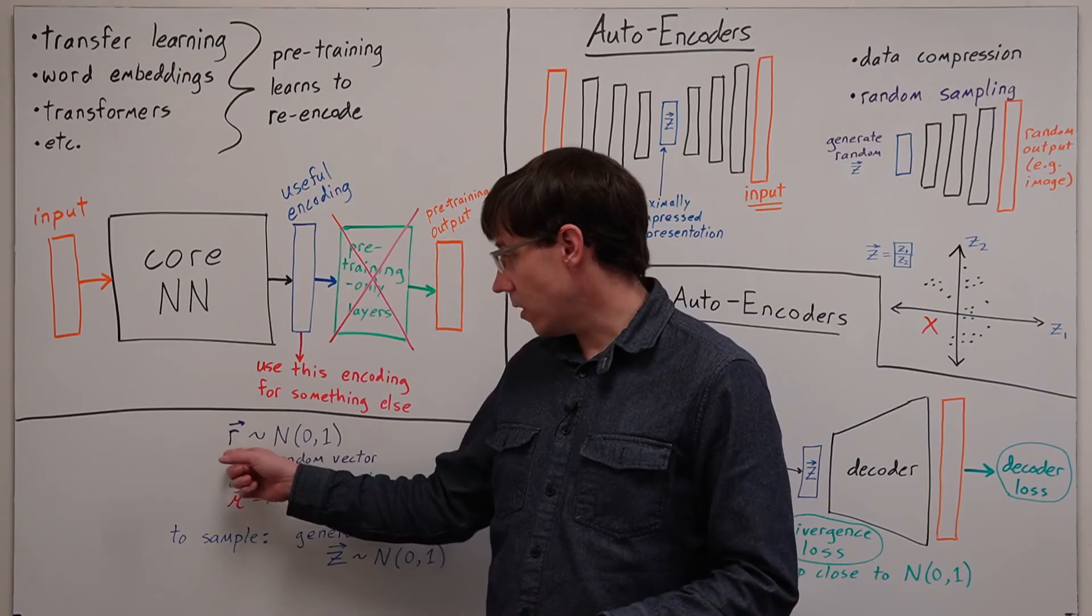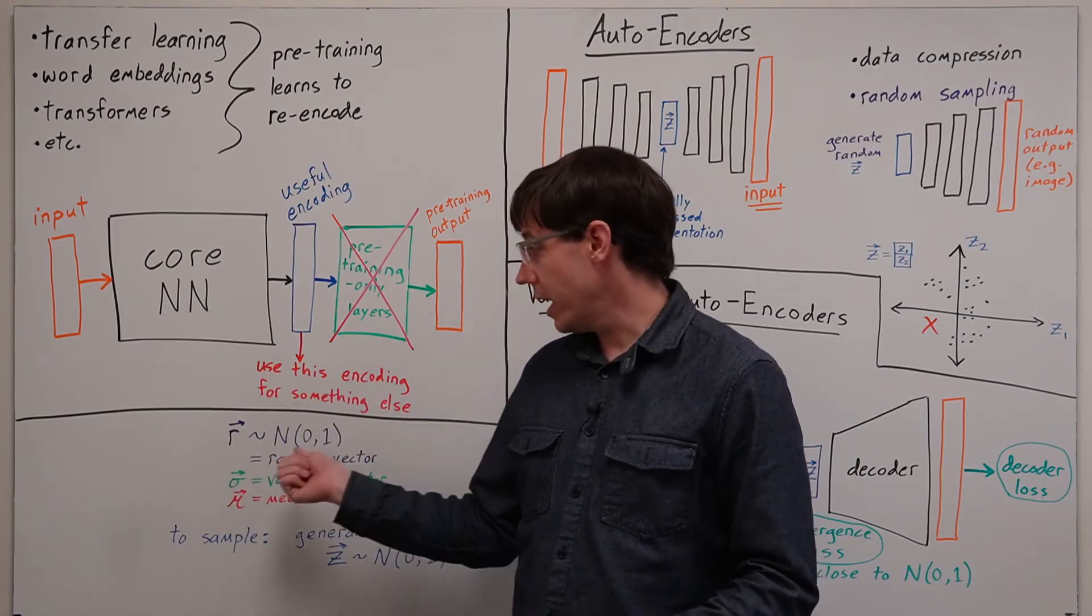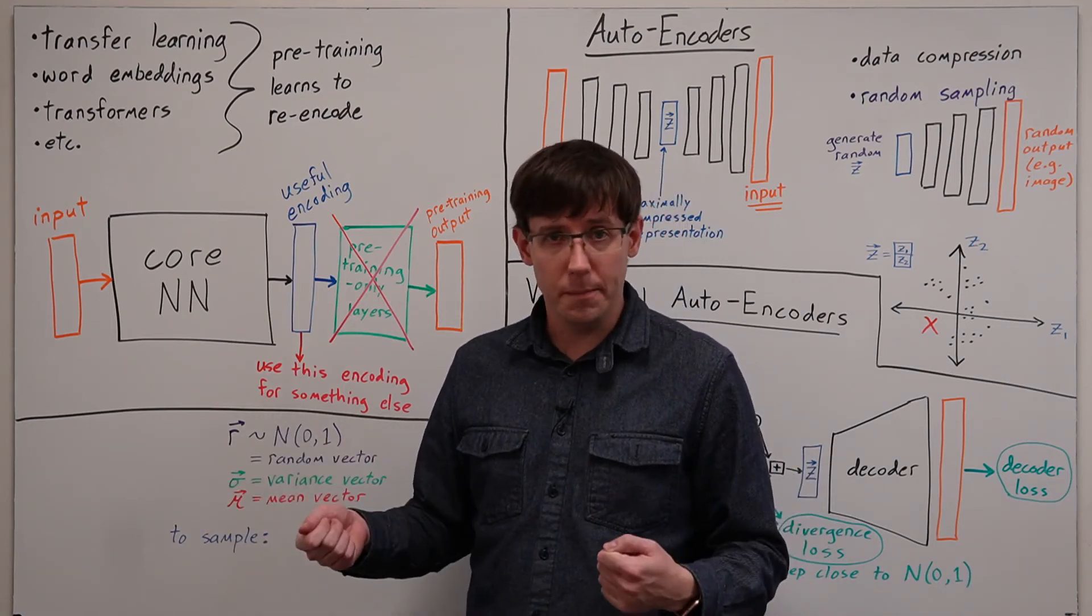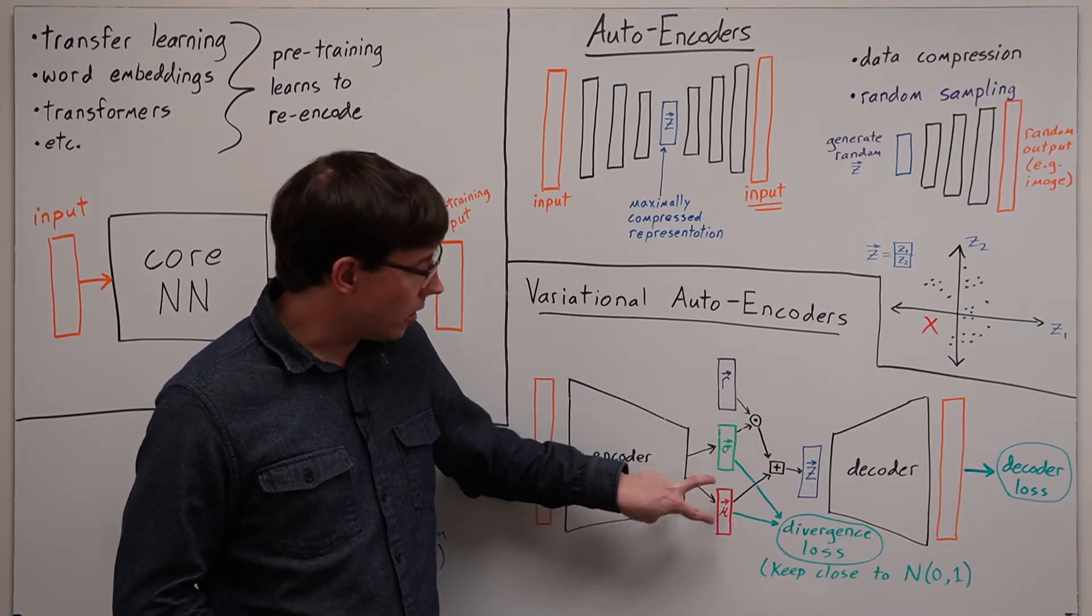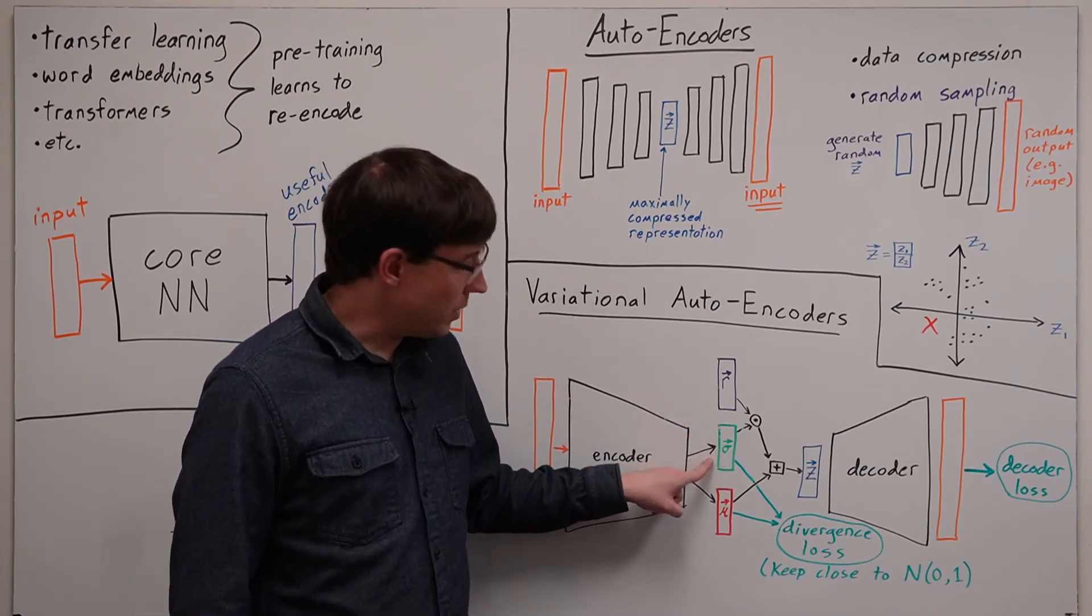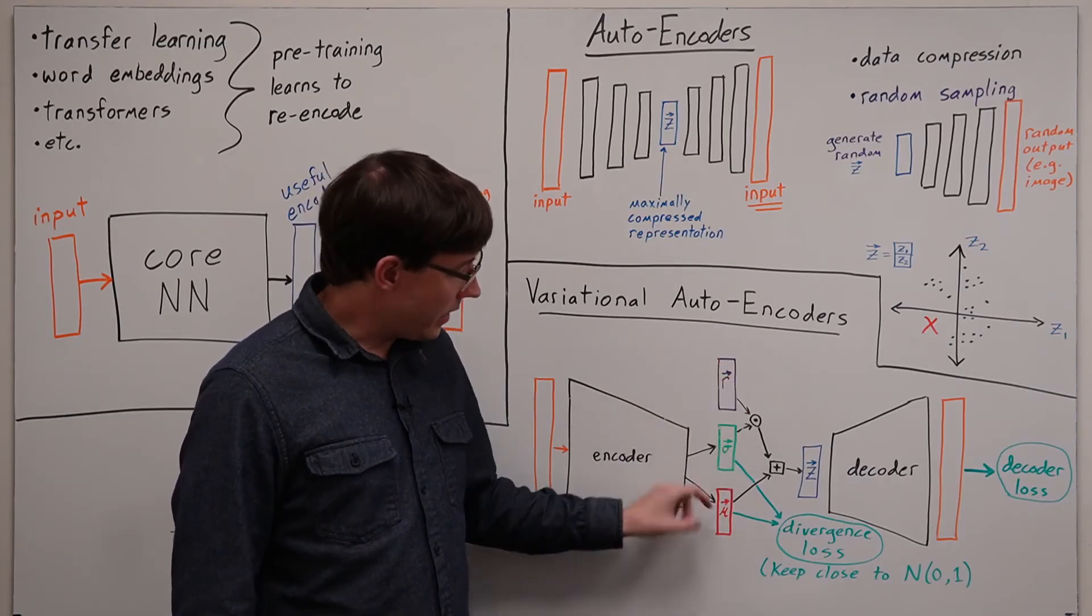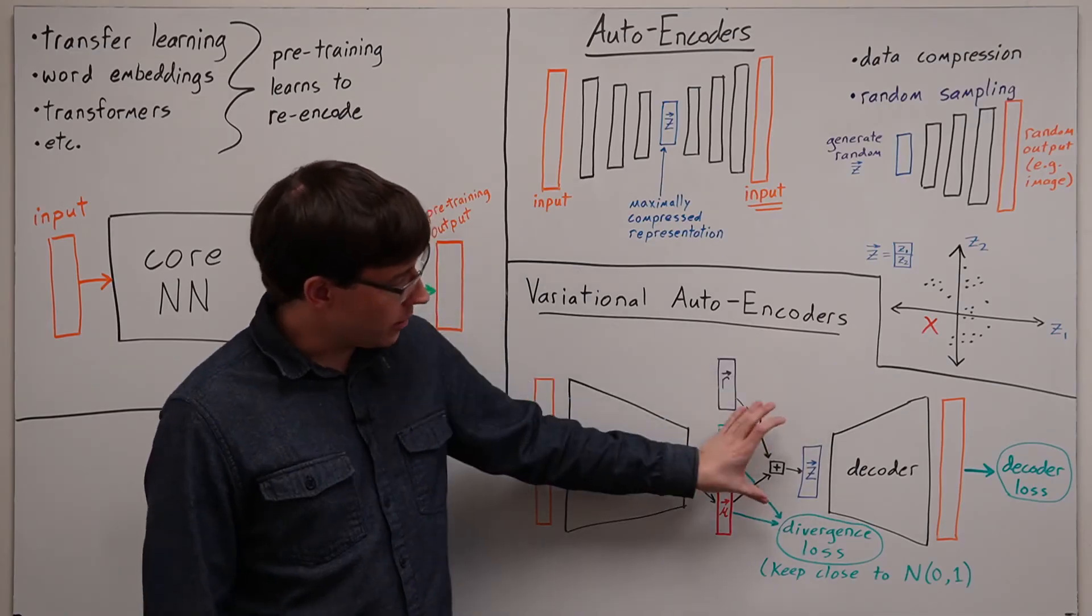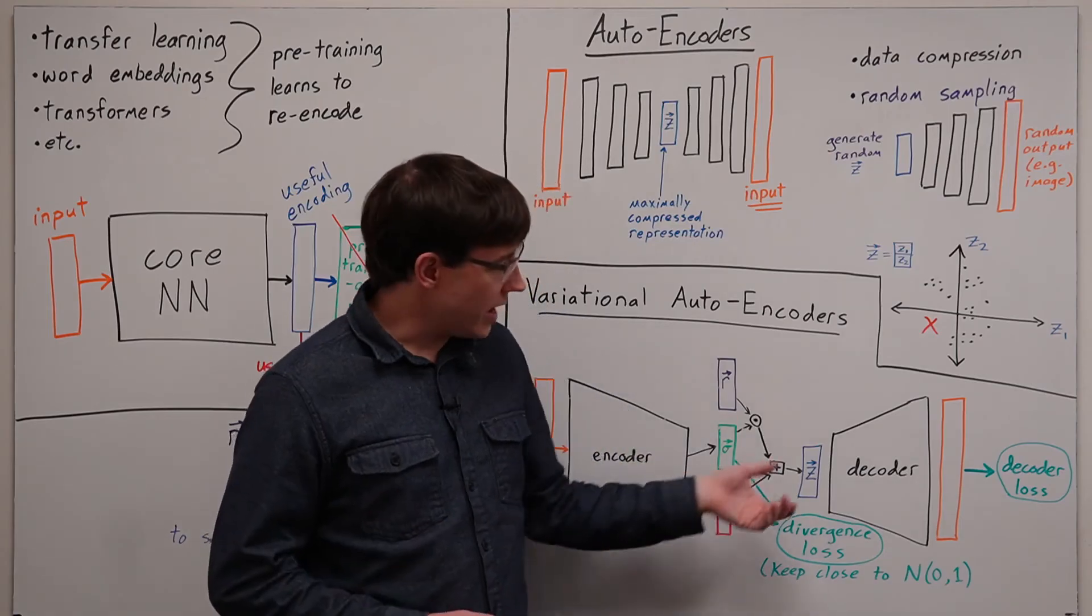We have a random vector r that gets generated by sampling each element from a normal distribution with mean 0 and standard deviation 1. Then that gets combined with the two vectors that are the hidden encoding of the data. The random vector gets multiplied with our variance vector and then that gets added to the mean vector, and that produces the vector that goes as input into the decoder portion of the network.